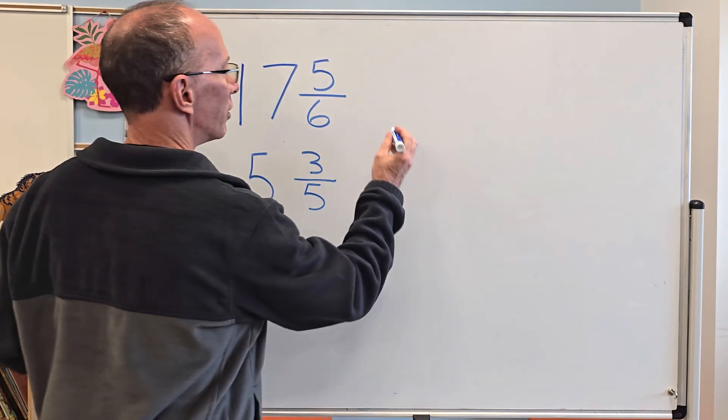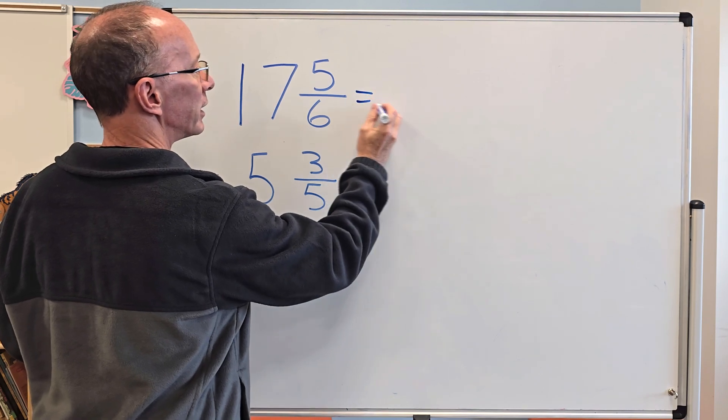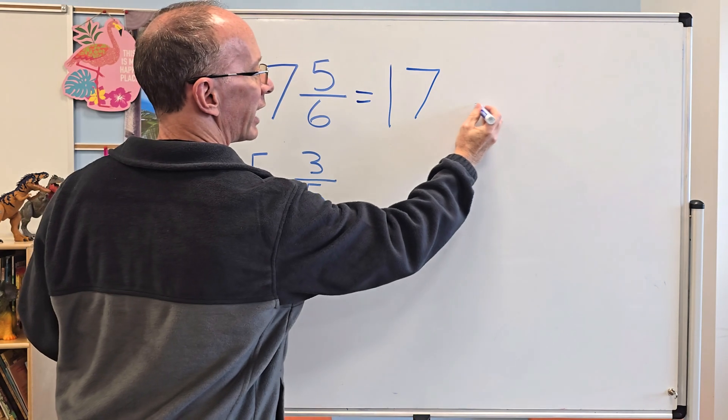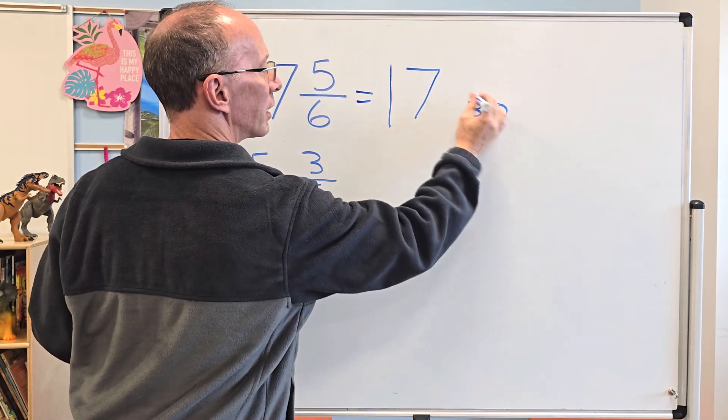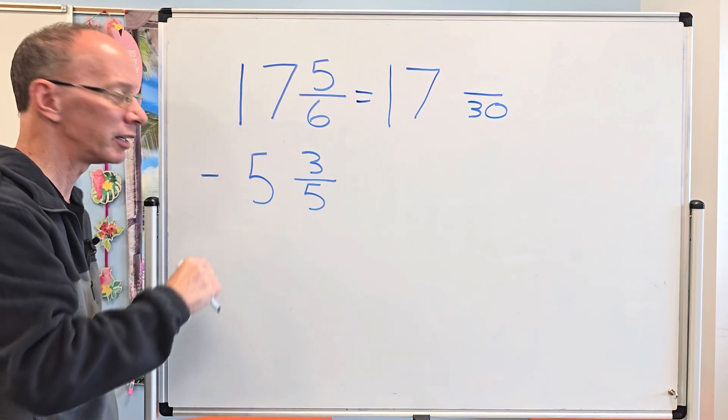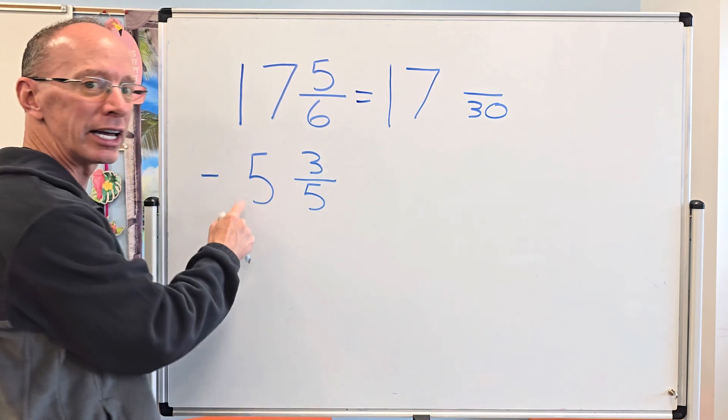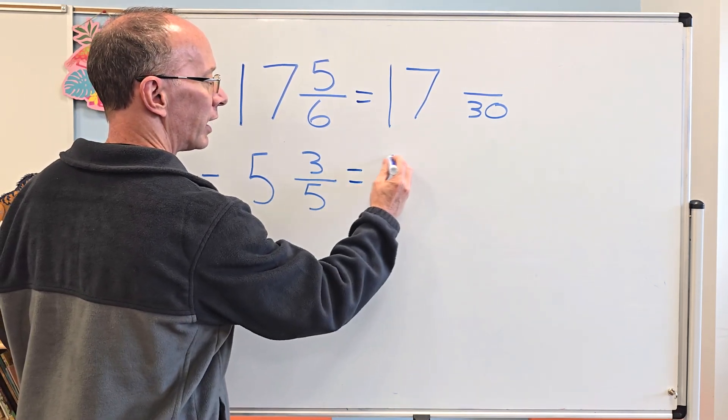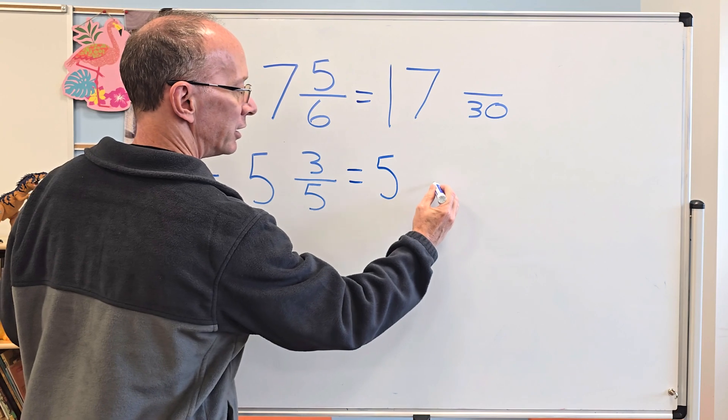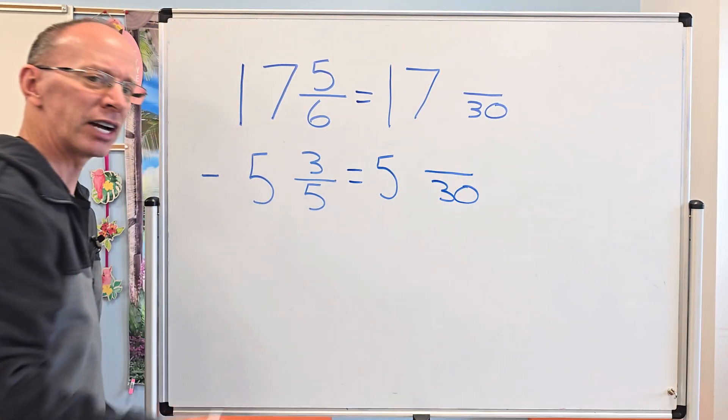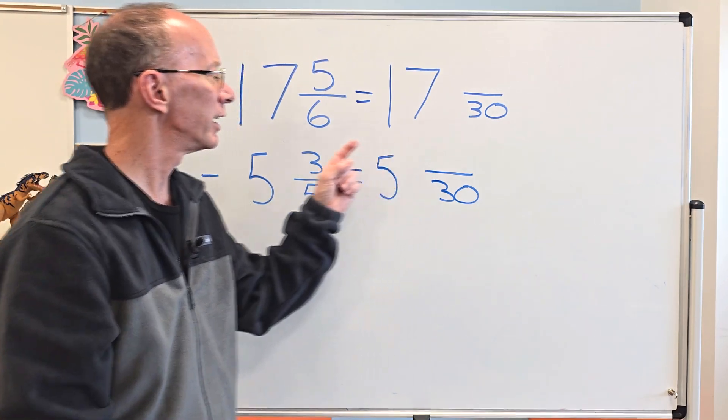I'm going to rewrite this. This will be 17 and my denominator is going to be 30, but I'm not sure what the new numerator is. I'm going to show you that in our next step. I'll rewrite 5 3/5 to 5 and my denominator is going to be 30. Now let's try to figure out that numerator.